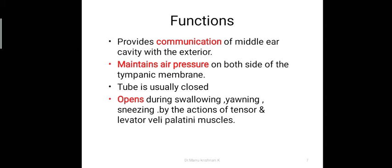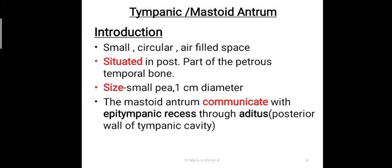This concludes the Eustachian tube — trumpet shaped, with two parts (bony and cartilaginous), with discussed relations and functions. Now the mastoid antrum: it is a small circular air-filled space situated in the posterior part of the petrous temporal bone, approximately 1 cm in diameter, shaped like a small 'p'. The mastoid antrum communicates with the epitympanic recess of the middle ear cavity through the aditus opening.